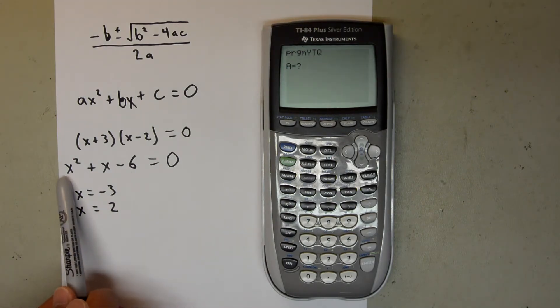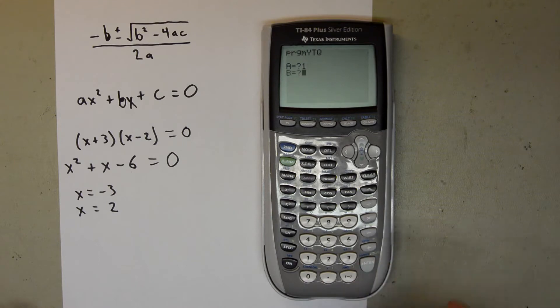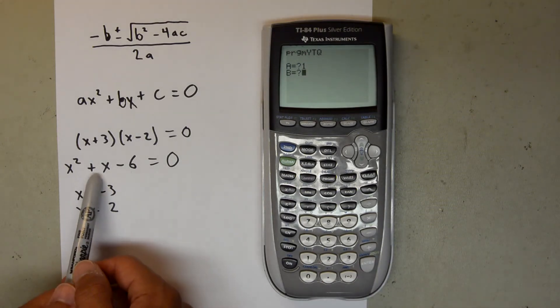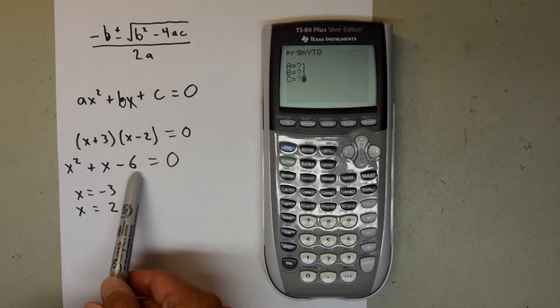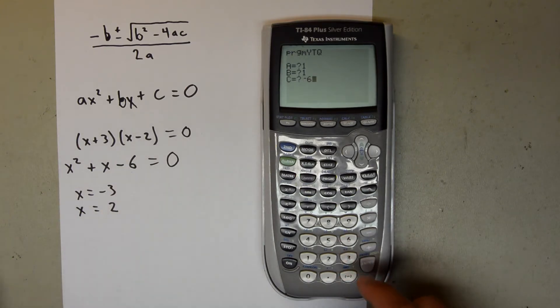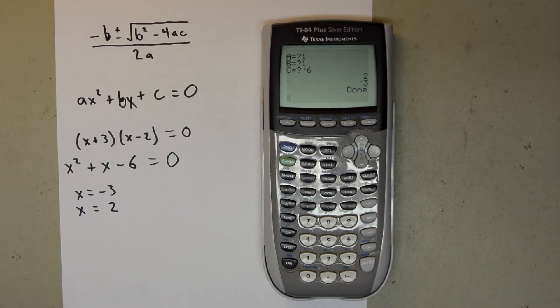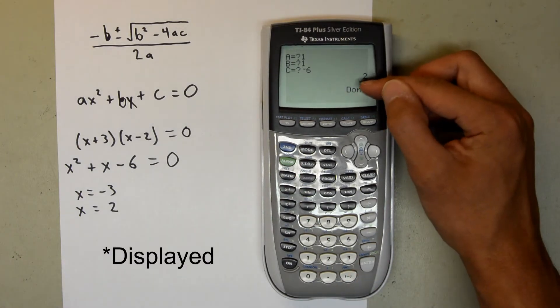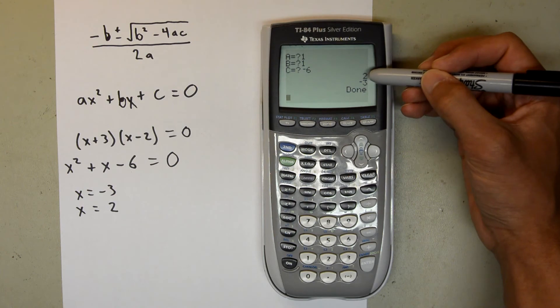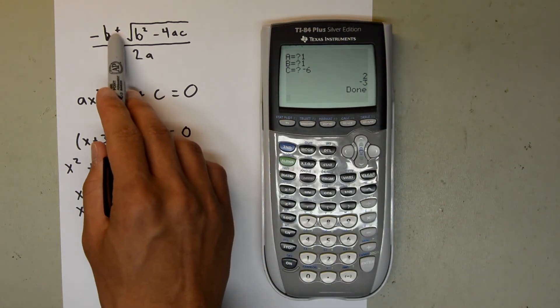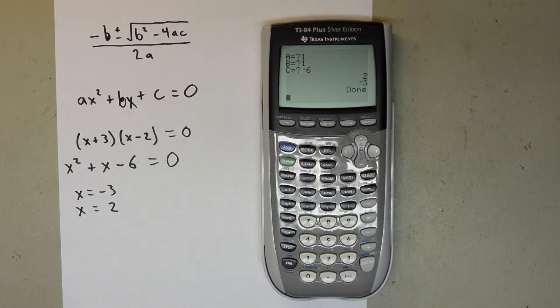Our A value, so what's in front of our X squared, is 1. So we'll say 1, enter. Now it's going to ask us for B, which again is 1. And now C is minus 6. So we plug in minus 6. And we hit enter. And now you see that this dispatched 2 and negative 3, which are the two values that we know are correct. The first value here corresponds to the plus part of the quadratic formula, and the second value to the minus as discussed earlier.